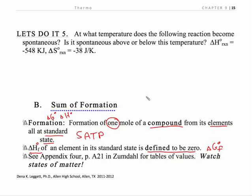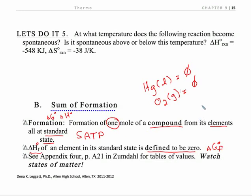So delta H naught and delta G naught for mercury liquid is zero. If it's not mercury liquid, it's got a value to it. Oxygen is gaseous, so it's zero. Sodium is a solid metal — it's zero. They're defined as zero.